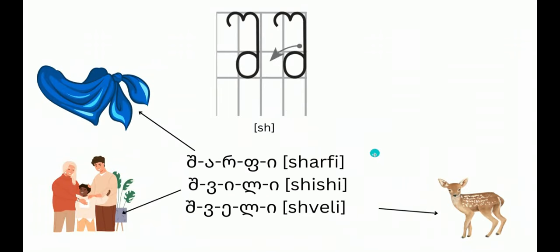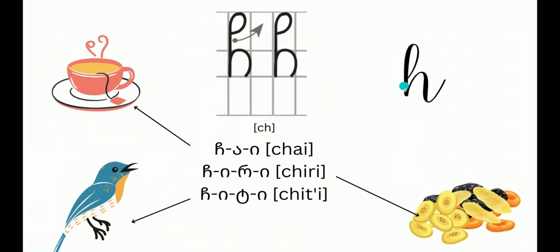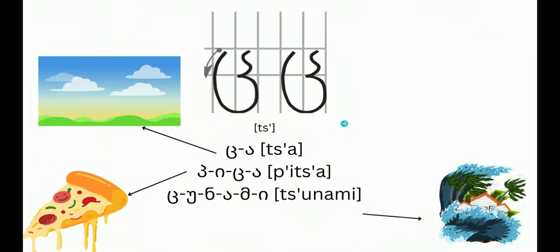Sh - sharpi, shvili. Ch looks like H. Ch - chai, chiri, chiti. Ts - tsa, pizza, tsunami.